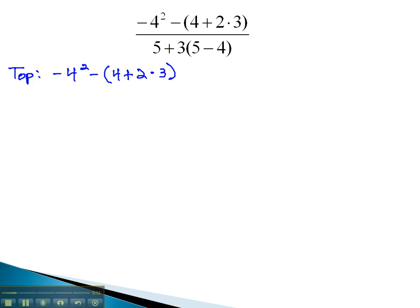As we know, the order of operations has us do parentheses first, and the multiplication before the addition. Now, we have negative 4 squared, or the opposite of 4 squared, minus 4, plus 2 times 3 is 6. Continuing in those parentheses, we simplify the 4 plus 6. So we have the opposite of 4 squared, minus 10.